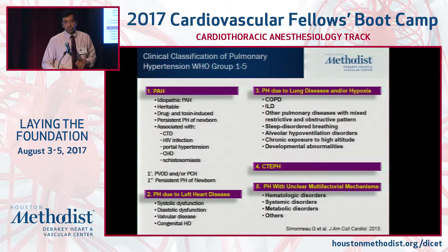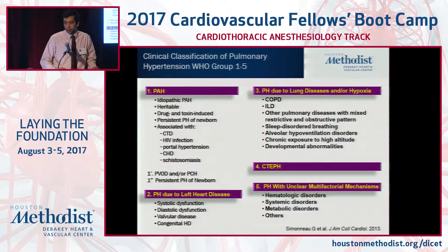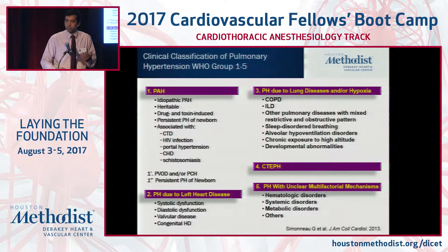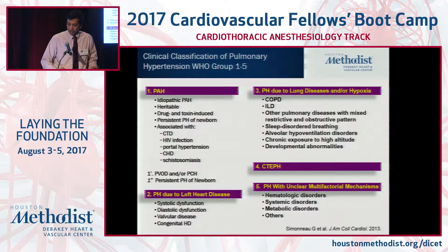PH due to left heart disease is the most common — as cardiologists, this is what we'll end up seeing most. These are patients with systolic and diastolic dysfunction and valvular heart disease. Group 3 is due to lung disease and/or hypoxia with COPD and interstitial lung disease. Group 4 is chronic thromboembolic PH in patients who've had PEs in the past, with pulmonary vascular remodeling leading to PH. Group 1 and Group 4 are the ones to really pay attention to, as these two have approved therapies, and Group 4 CTEPH is potentially curable with surgery — pulmonary thromboendarterectomy.